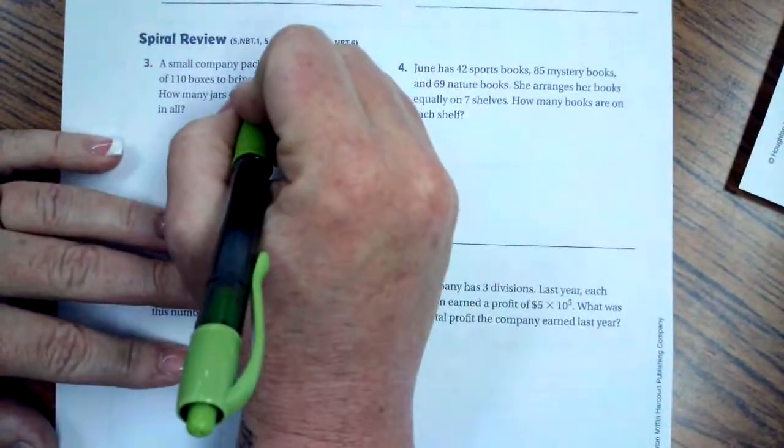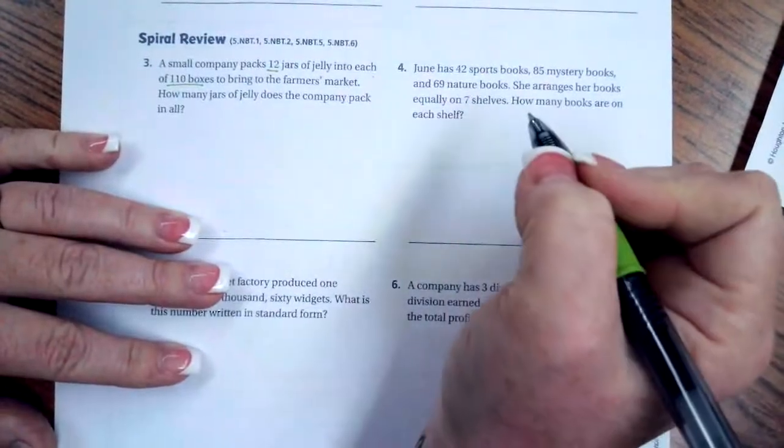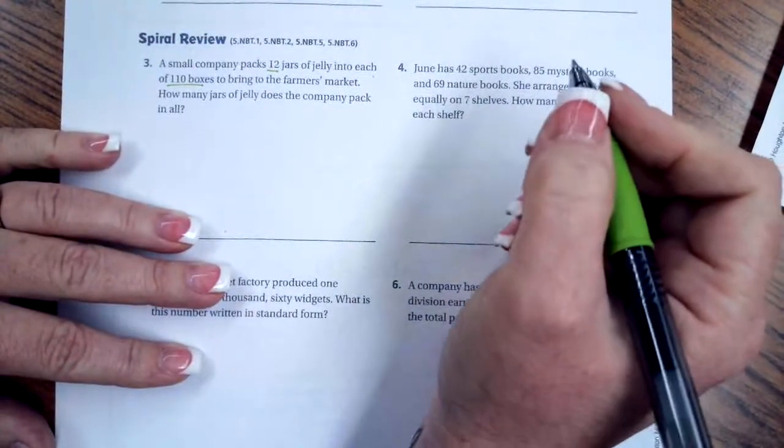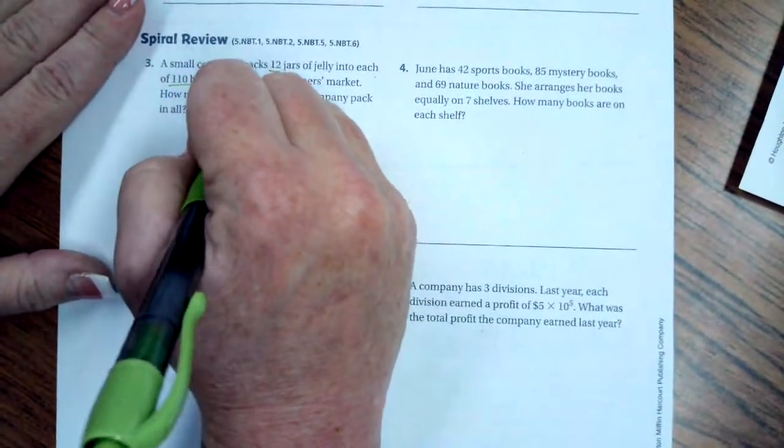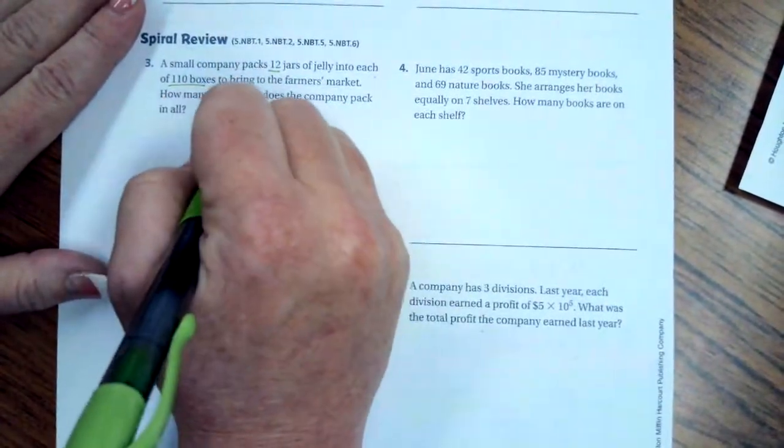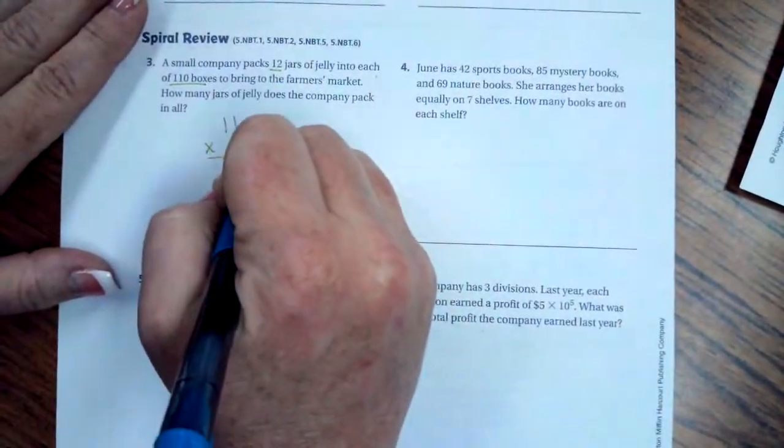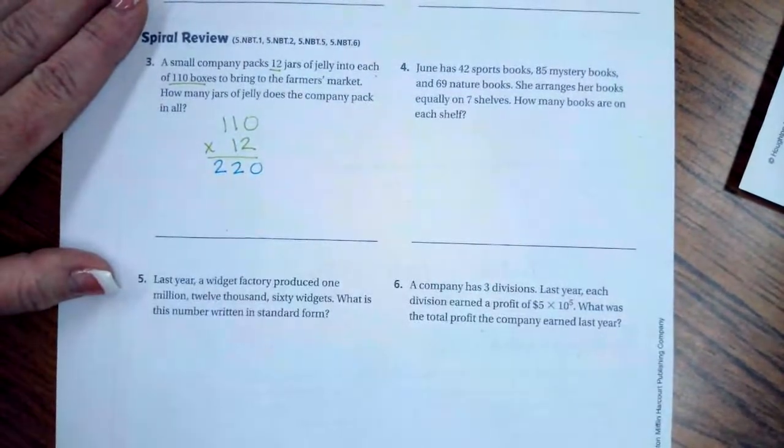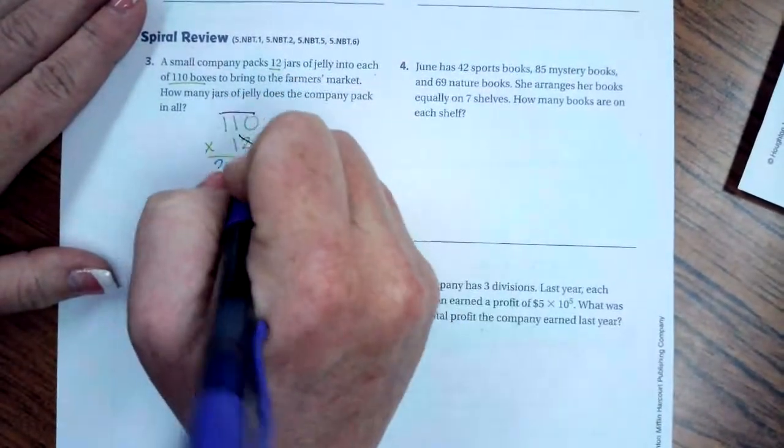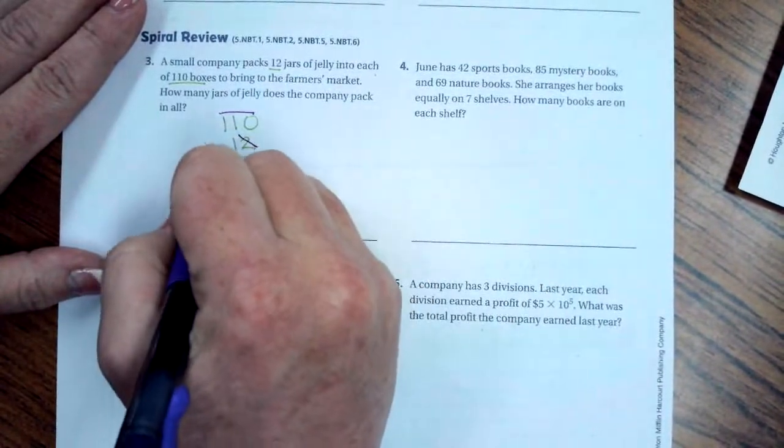We're going to go down and do this spiral review now. So a small company packs 12 jars of jelly onto each of 110 boxes to bring to a farmer's market. How many jars of jelly does the company pack in all? So we're going to say 110 times 12. And 2 times 0 is 0. 2 times 1 is 2. 2 times 1 is 2. We're going to go tick, tack, and toe.